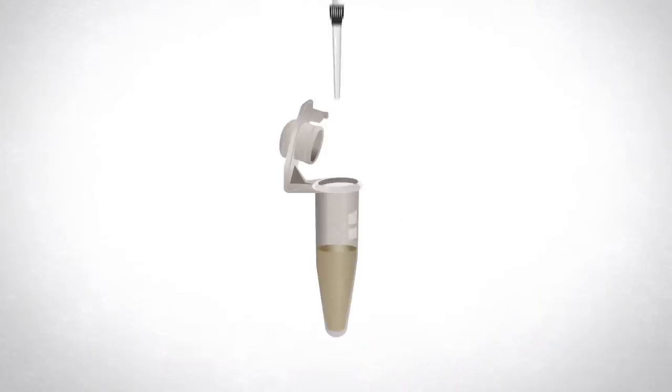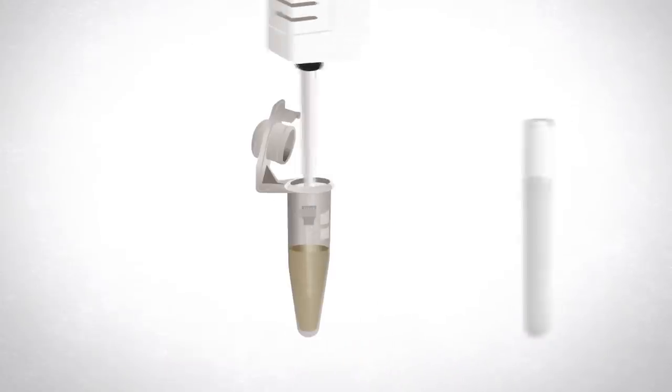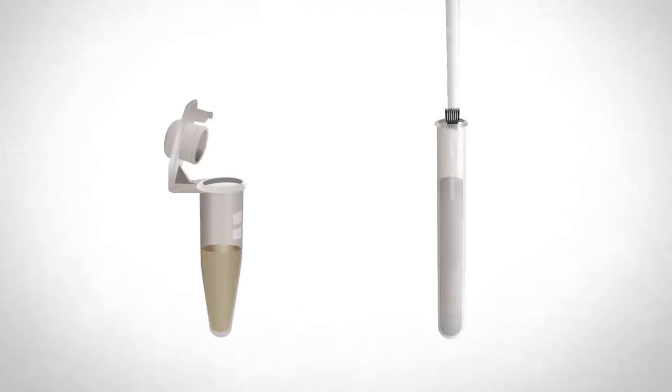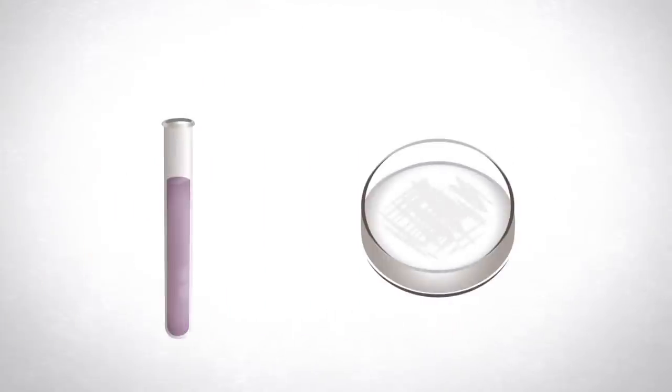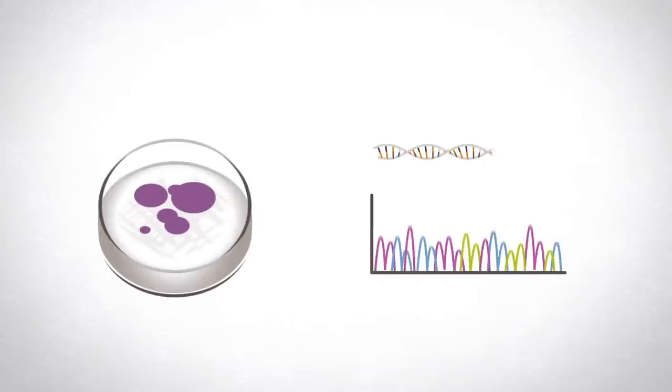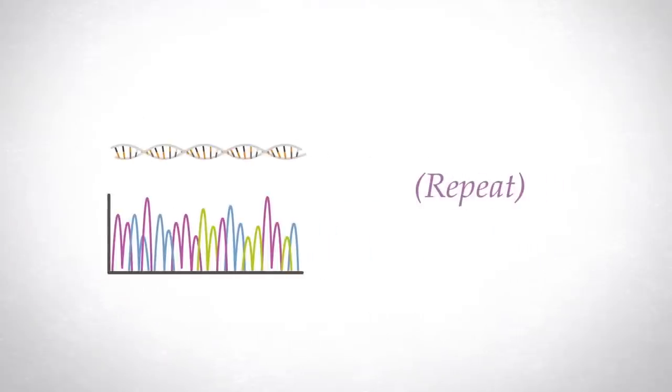Before next generation sequencing, this technique was much more limited. With capillary electrophoresis sequencing, each type of bacteria had to be grown as a pure culture, and its genomic DNA sequenced one organism at a time.